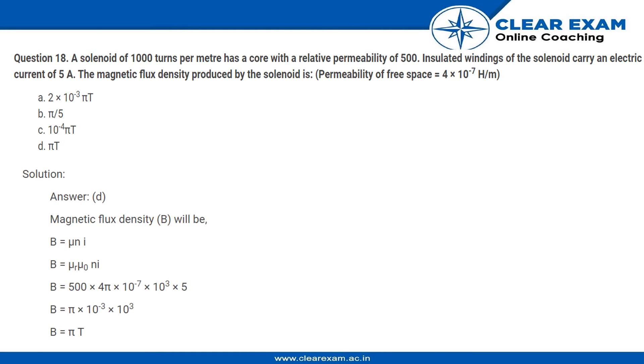We need to find the magnetic flux. The magnetic flux formula for a solenoid will be μnI, correct? And μ is μ₀, that is the permeability.